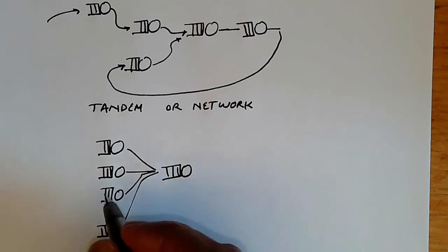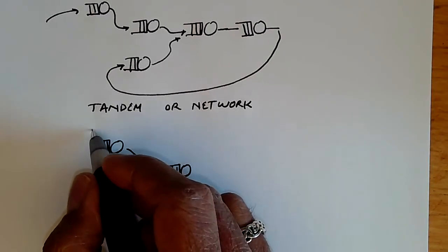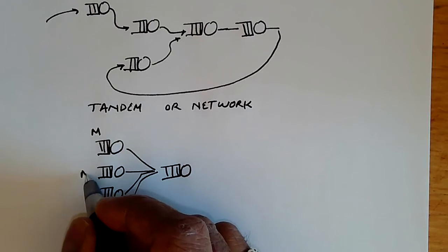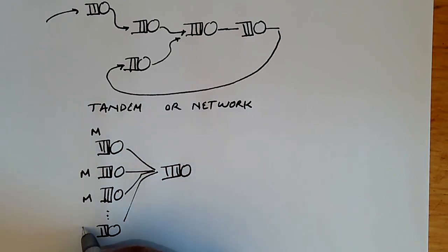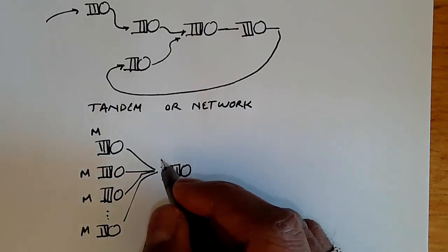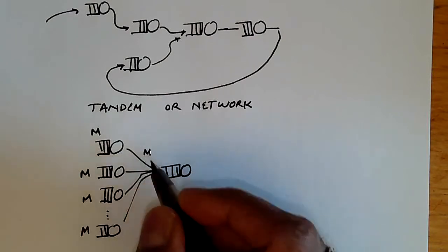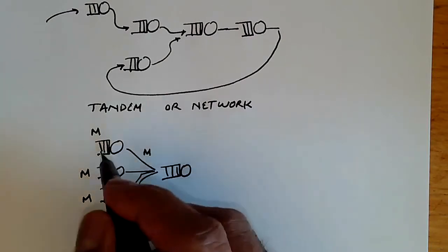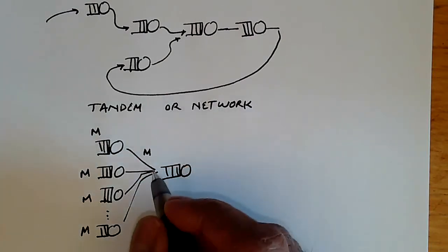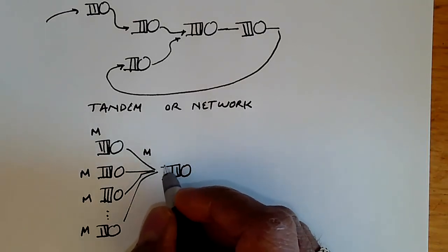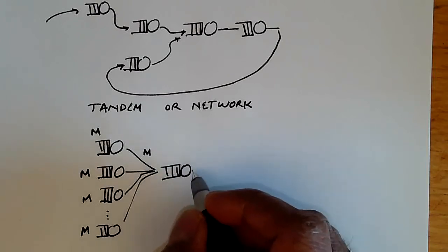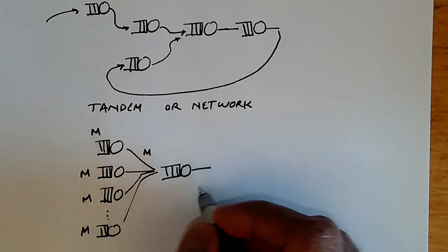We can see that if the input to these queues are Markov—they're all Poisson processes—then it can be shown that the output of these are also Markov. The sum of these outputs constitutes also a Markov process.